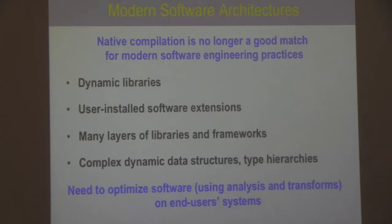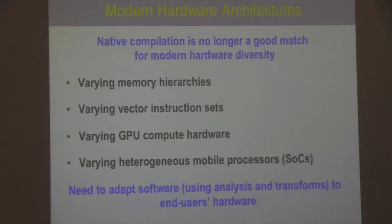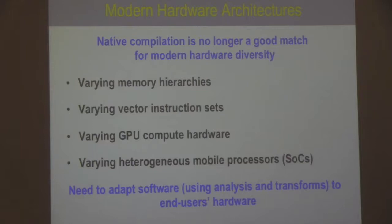What you'd like to be able to do is optimize software using program analysis on the end user's systems, where much more information is available — but native compilation doesn't give you that. Similarly, modern hardware has outpaced the ability of traditional compilation to deal with it. Within the class of x86 or ARM processors, memory hierarchies vary tremendously and can give significantly different performance characteristics. This is why libraries like ATLAS for matrix multiply and FFTW for fast Fourier transforms do significant auto-tuning on the end user's machine.